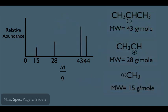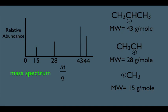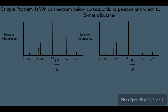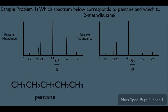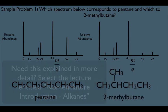This is the mass spectrum of propane. Now let's look at a sample problem. The question asks which spectrum corresponds to pentane and which to 2-methylbutane. Both spectra have the heaviest peak at 72. Calculating the molecular weight of pentane gives 72 g/mol — the same as 2-methylbutane. So the molecular ion peak won't help us distinguish them. However, both spectra have peaks at 57, but one has a higher relative abundance and the other a lower relative abundance at 57.